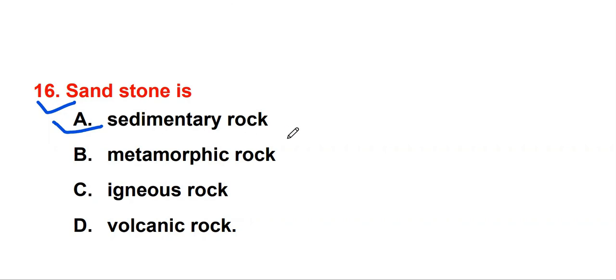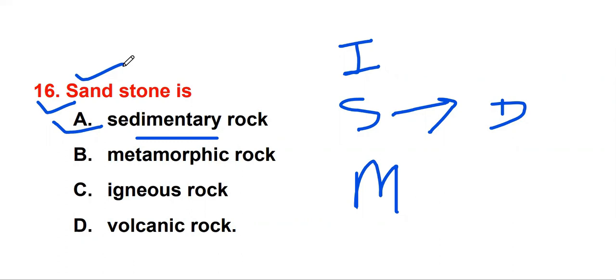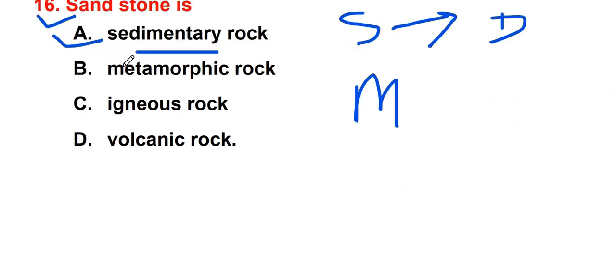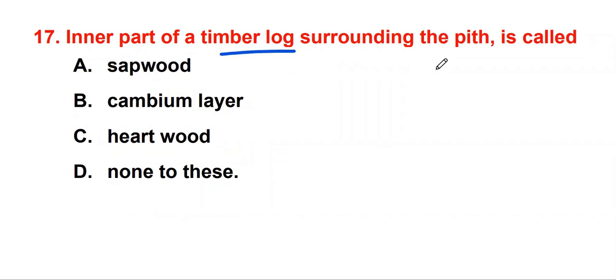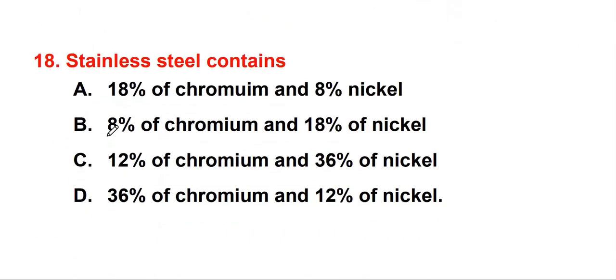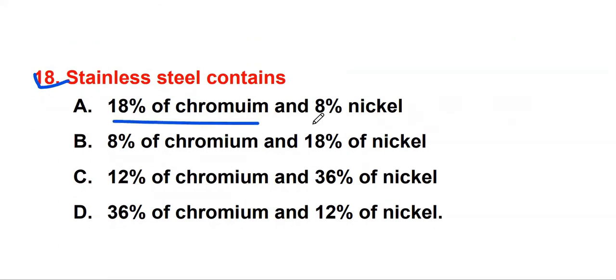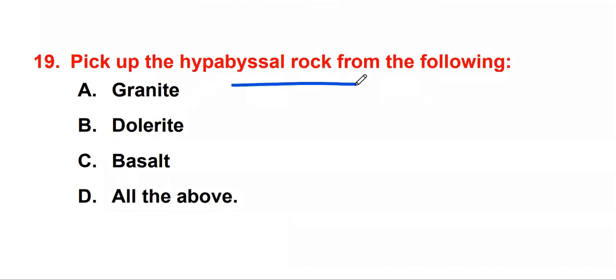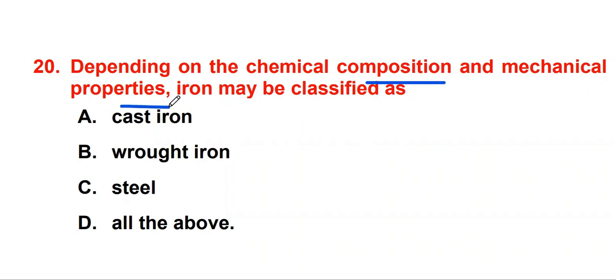Sandstone is sedimentary rock. Geologically, rocks are classified into three classes: igneous rocks, sedimentary rocks, and metamorphic rocks. Sedimentary rocks are formed due to deposition of particles, and sandstone is formed from deposition of particles. That's why it falls under sedimentary rocks. The inner part of timber surrounding the pit is called heartwood. At the center is pit, and surrounding of this pit is called heartwood. Stainless steel contains 18% chromium and 8% nickel. Pick up the hypabyssal rock from the following - dolerite is the example. Depending on chemical composition and mechanical properties, iron may be classified as cast iron, wrought iron, and steel. So answer is all the above.